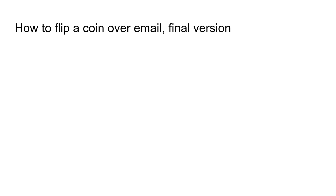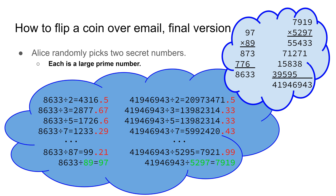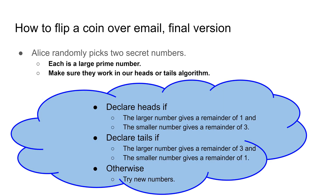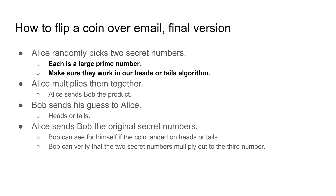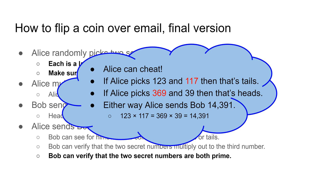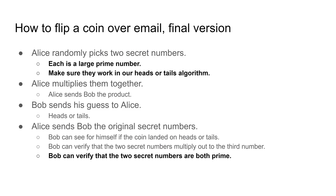Let's finish our algorithm. We start with Alice picking two secret numbers and they have to be large prime numbers — large numbers are harder to reverse engineer, and they have to work in our heads-or-tails algorithm. The game continues as before, then there's one extra step at the end: Bob verifies that the two secret numbers are both prime. In our example, Bob knew that Alice cheated because the numbers in red are not prime. And that's it — that's the entire algorithm on the screen.